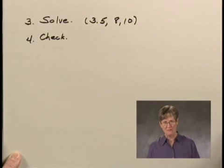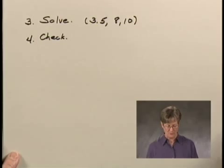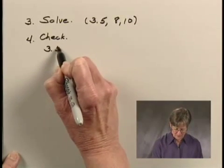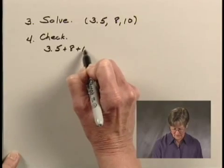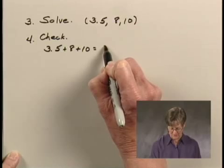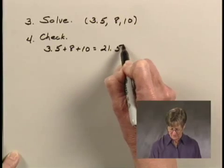There are three things we need to check. First, we were told that the total number of hours worked was 21.5, so we need to see if 3.5 plus 8 plus 10 equals 21.5, and when we add these numbers together, that's exactly what we get. So that checks.